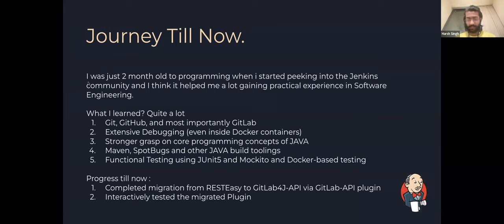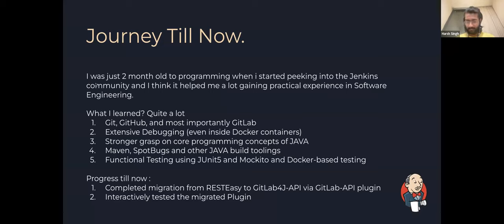In coding phase one, I was just a two-month-old programmer when I started contributing to Jenkins, and it has been a great experience. I learned quite a lot, including GitHub and most importantly GitLab, extensive debugging even inside Docker containers, improved my Java knowledge, Java building with Spotbugs and other Java toolings, and functional testing using JUnit, Mockito, and Docker-based testing. I completed a migration from REST-Easy to GitLab4J API via the GitLab API plugin, and we as a mentoring team have successfully tested the migrated plugin interactively.